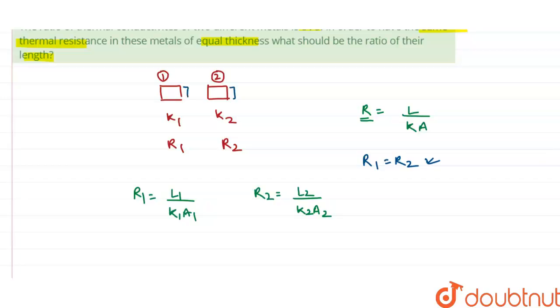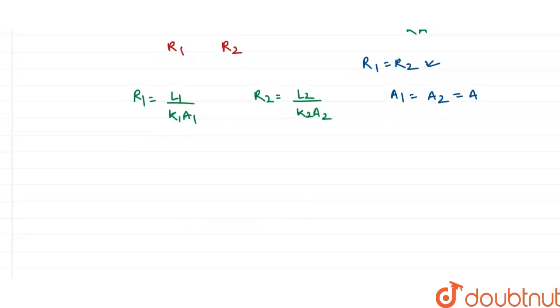This means if the thickness is the same, the cross-sectional area is also the same. Suppose the cross-sectional area is A. Now, putting all the values, R1 = R2.